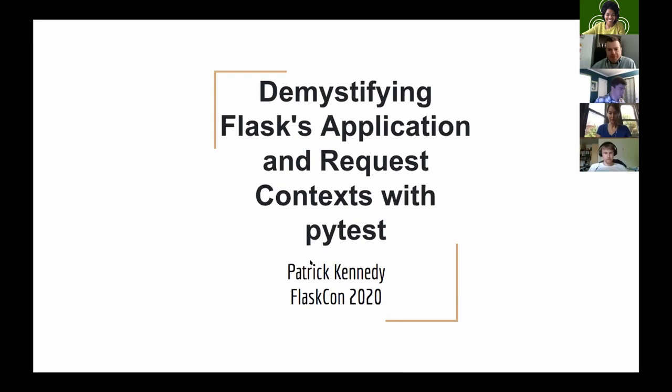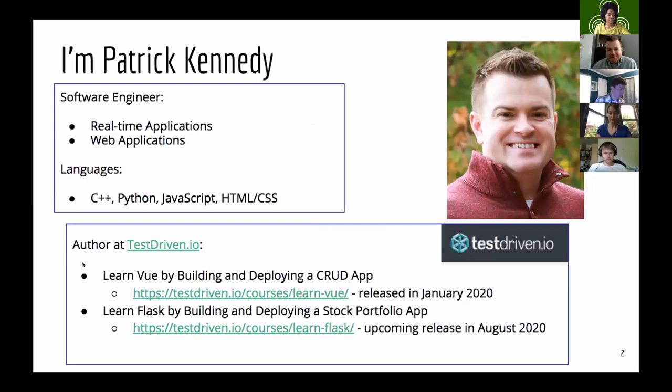Today I'm going to be talking about the application and request context in Flask. A little bit about myself: I'm a software engineer with experience doing real-time and web applications. Over the years, I've gravitated towards C++ and Python as my favorite languages. One of my current endeavors is being an author at testdriven.io. I released a course on Vue in January, and I'm wrapping up a course on Flask, which should be ready next month in August.